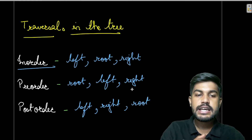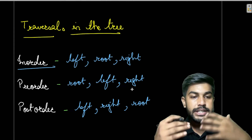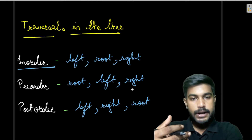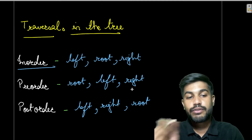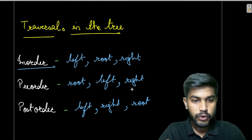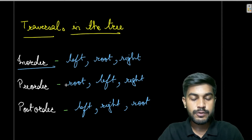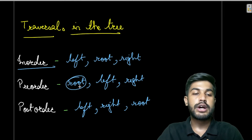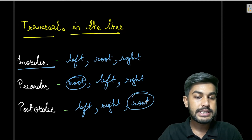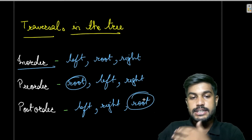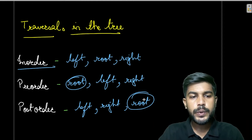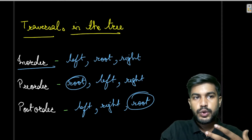To remember these: in-order means left, root, right — in order. Pre-order: 'pre' means before, so the root comes before the rest. Post-order: 'post' means after, so the root comes after. And left always comes before right across all three traversals.